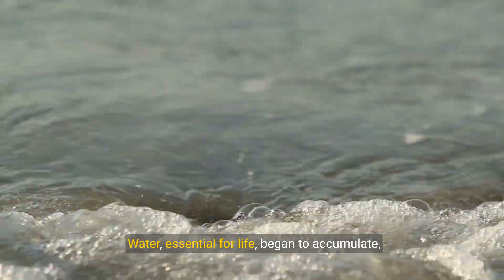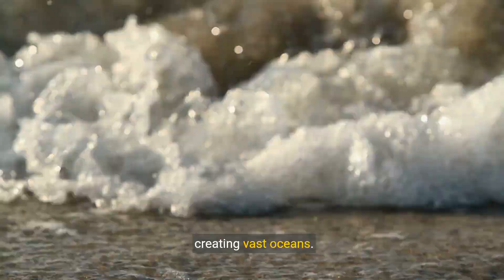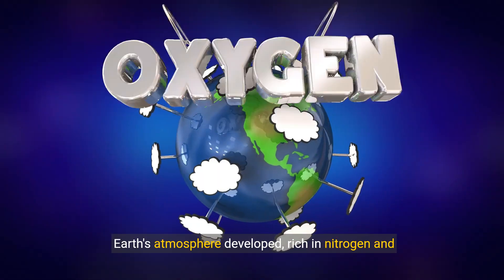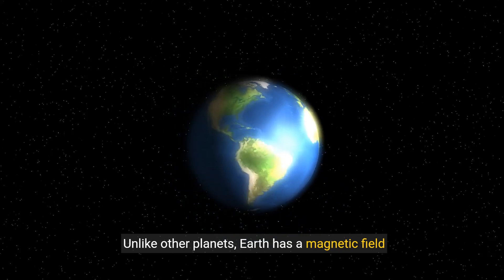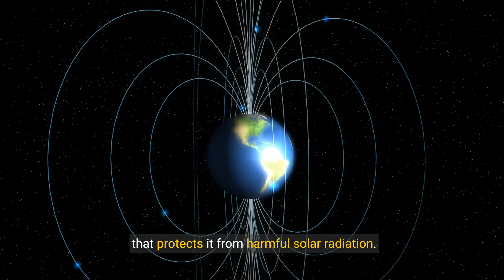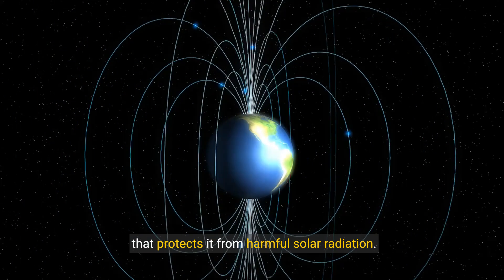Water, essential for life, began to accumulate, creating vast oceans. Earth's atmosphere developed, rich in nitrogen and oxygen, crucial for life. Unlike other planets, Earth has a magnetic field that protects it from harmful solar radiation.